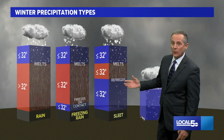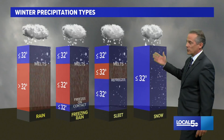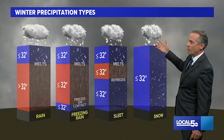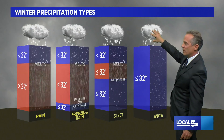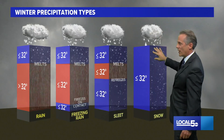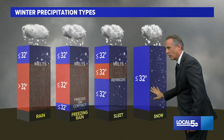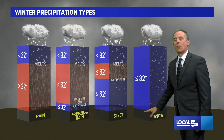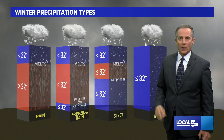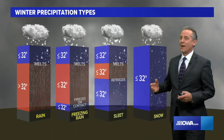And then finally what you can get is just plain old snow. That's when the snow falls and it's below 32°F all the way down — there's no melting going on, no refreezing.